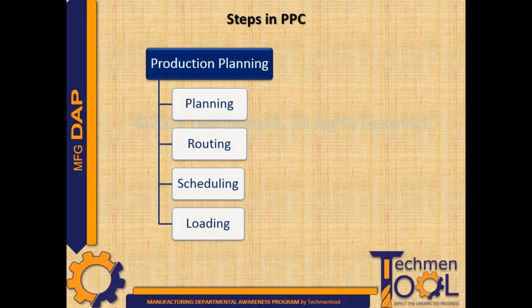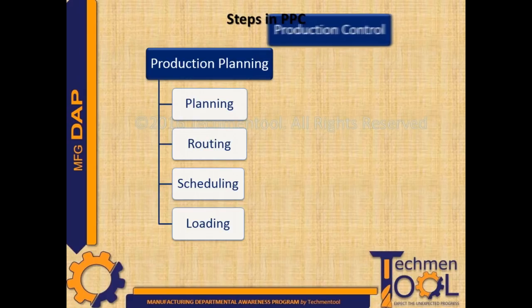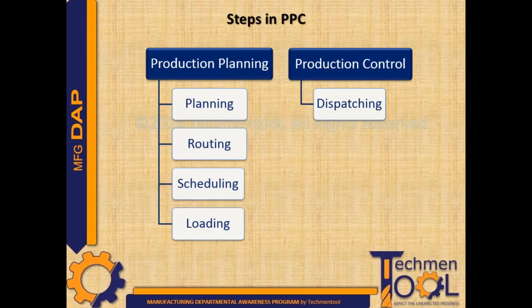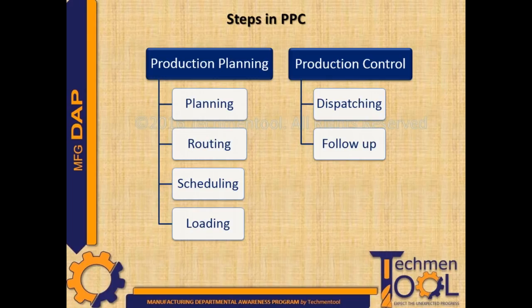Loading involves initiation of execution of the scheduled plan. In production control, there are four steps: dispatching, follow-up, inspection, and correction. Dispatching is the process of authorizing the start of operations on the shop floor; it involves releasing orders and work instructions for starting the production process.